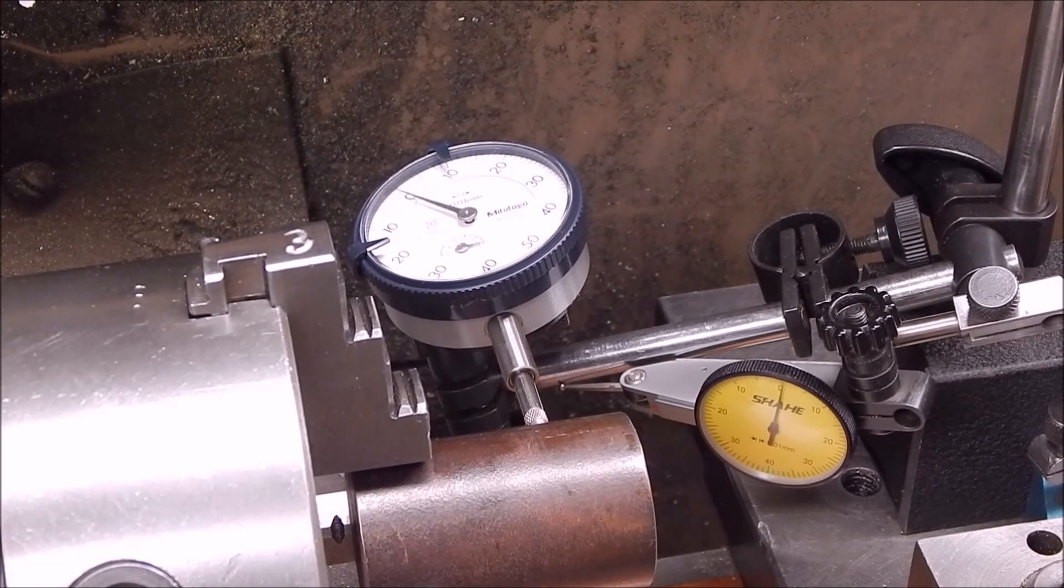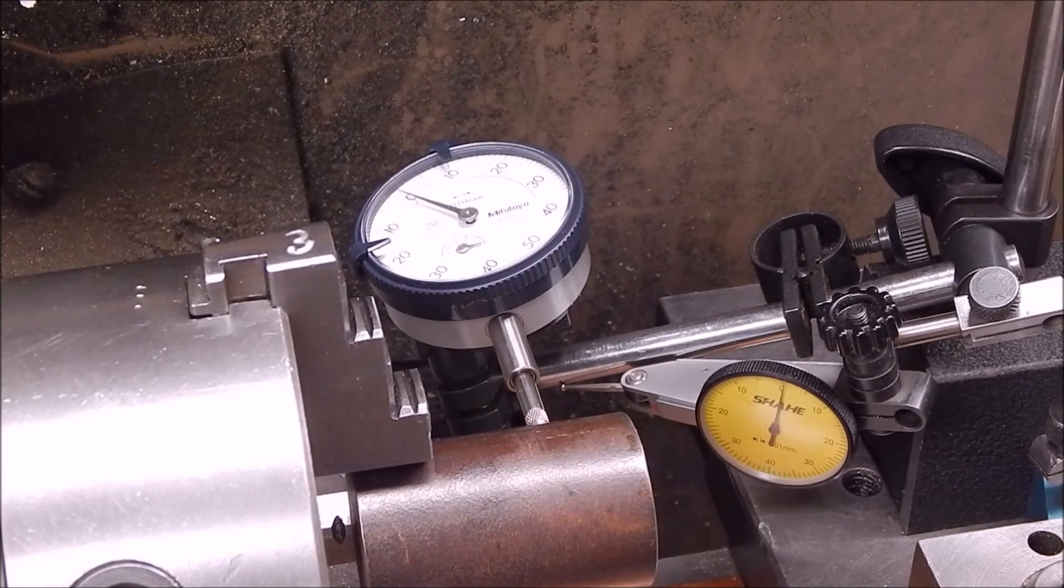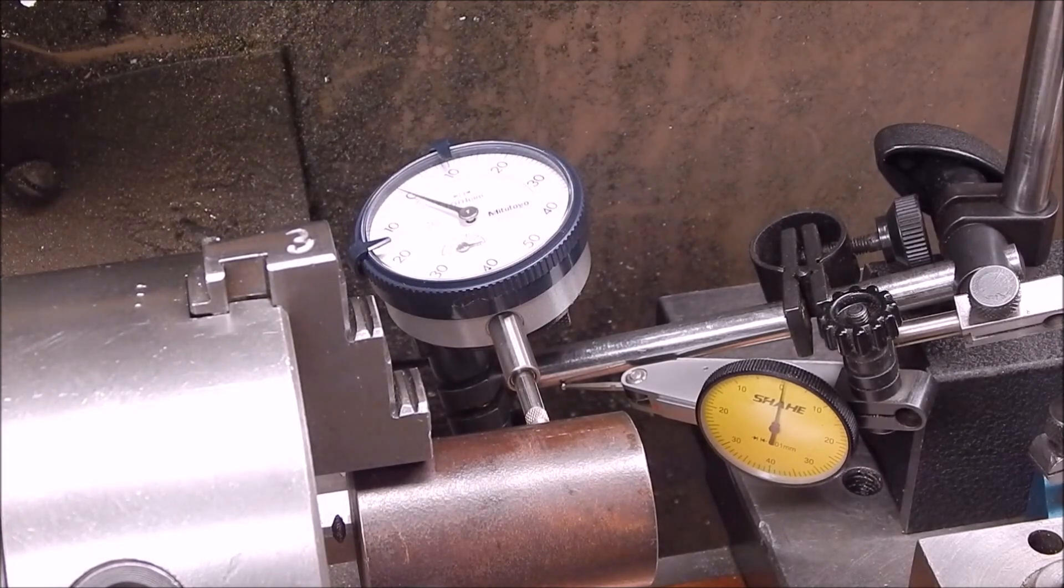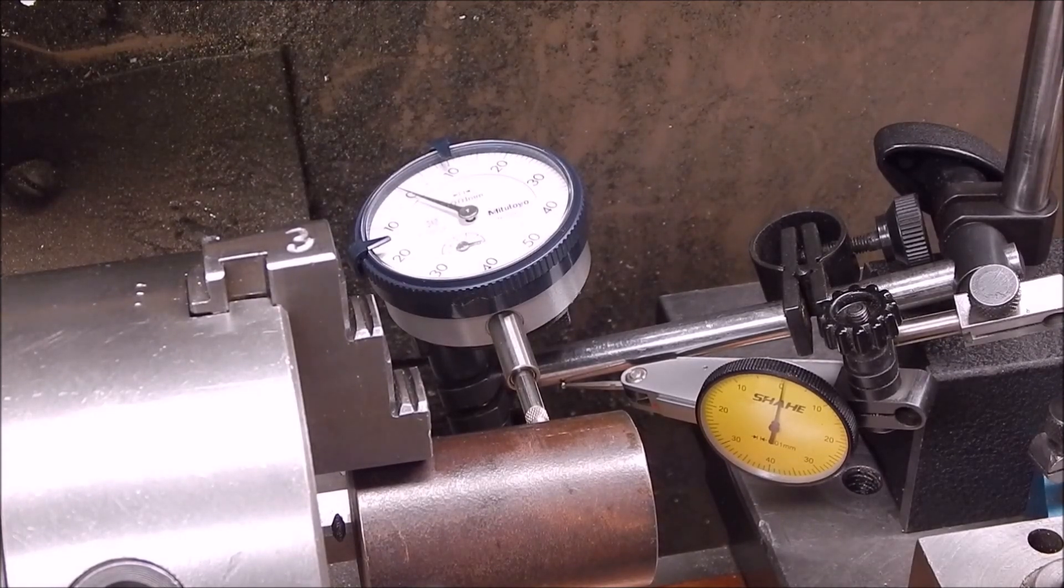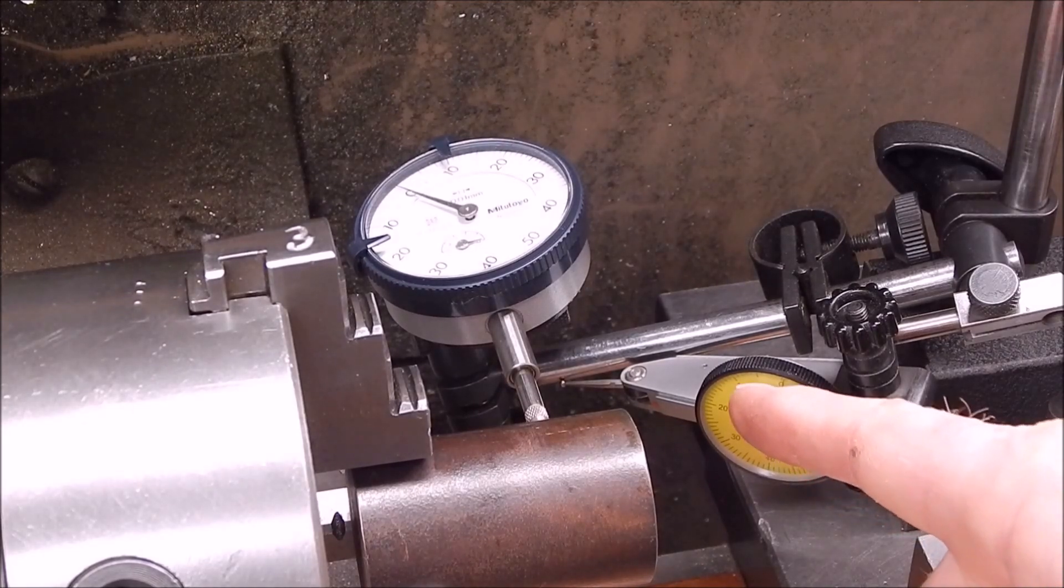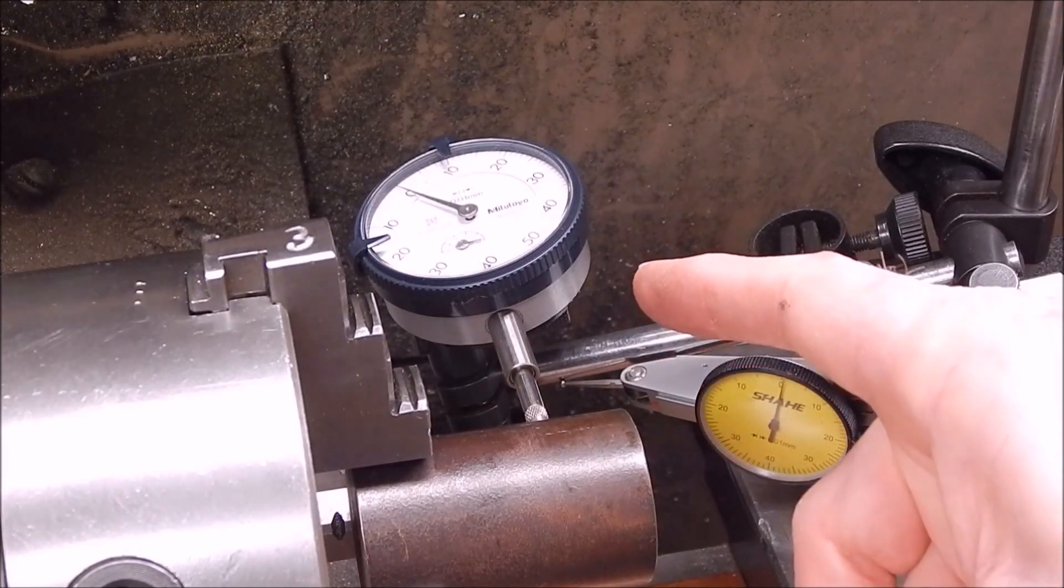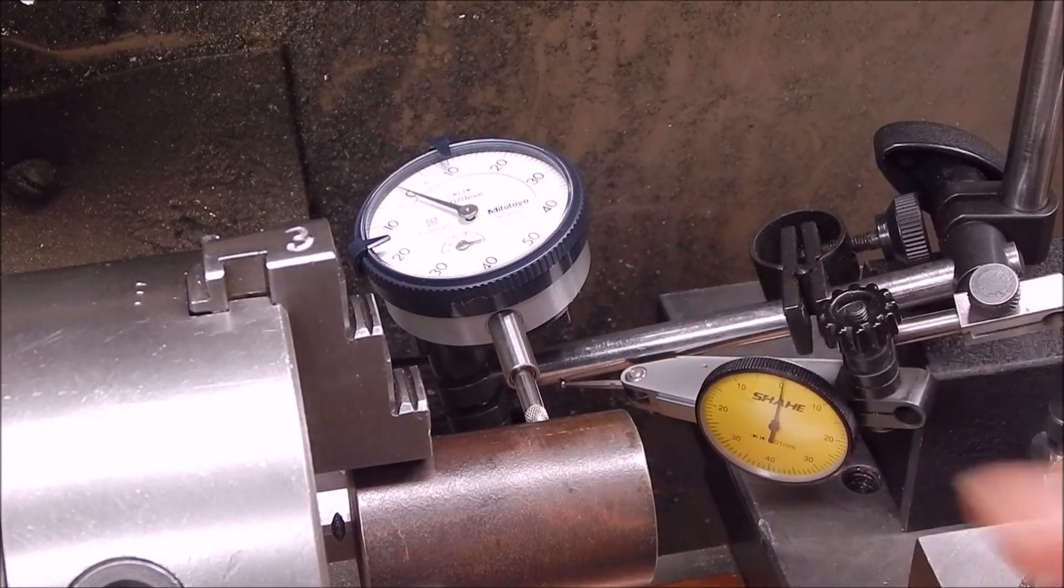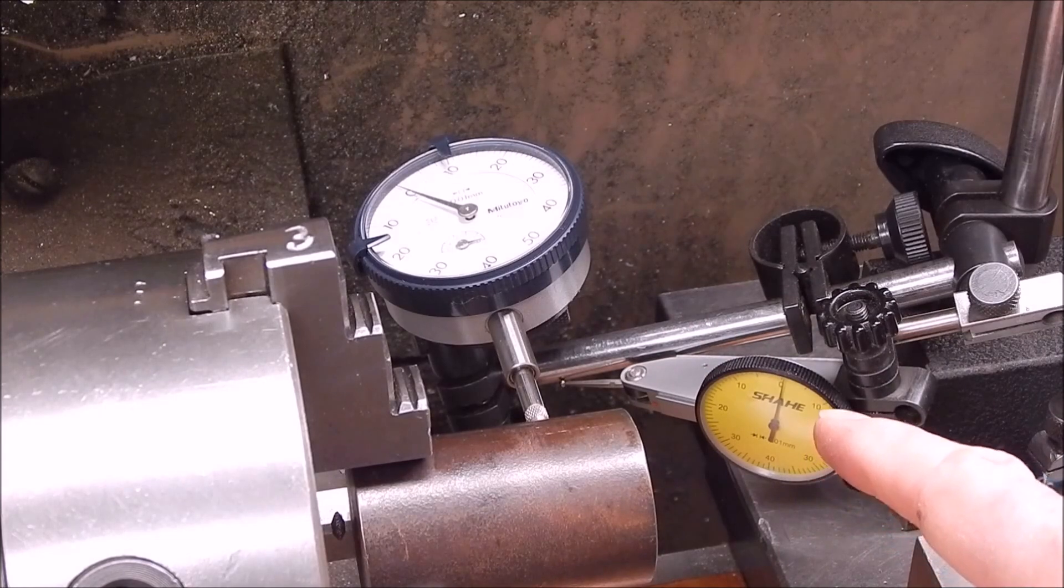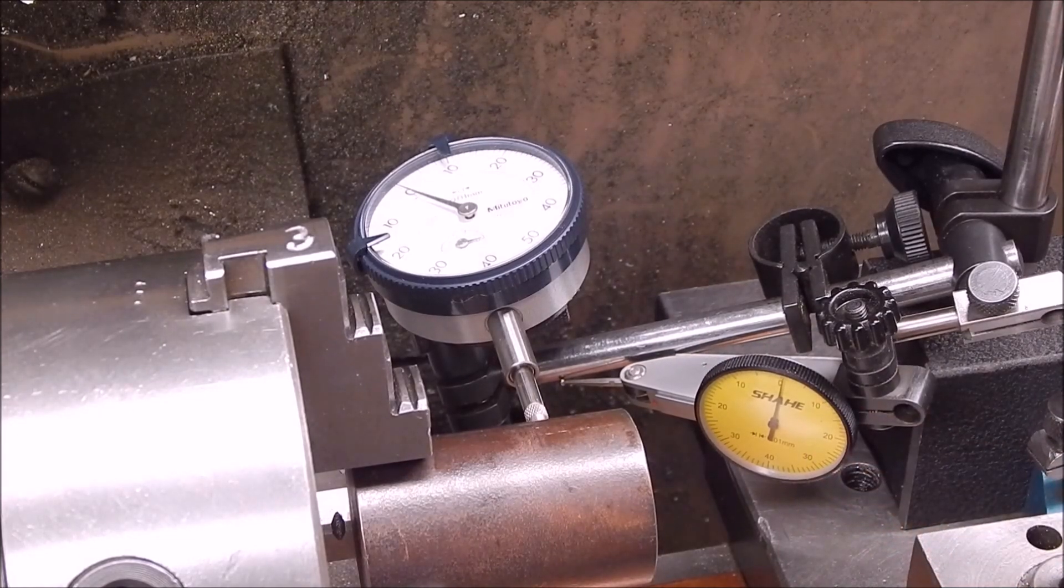This is a standard mag base. It's a Mitutoyo copy. It's not a genuine Mitutoyo. I do have a genuine one as well, but this is what most people will be using. So we've got the test indicator zero against the arm. We'll bring the dial indicator against the work. And we'll look for the deflection in the arm. So we'll bring it in.